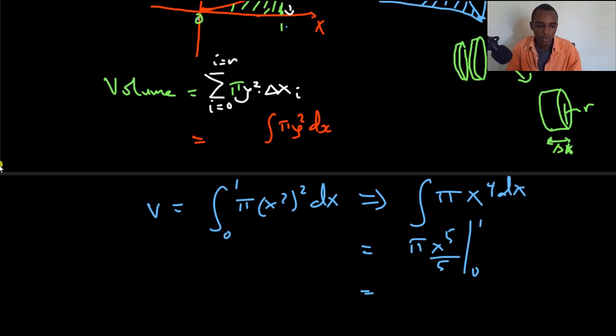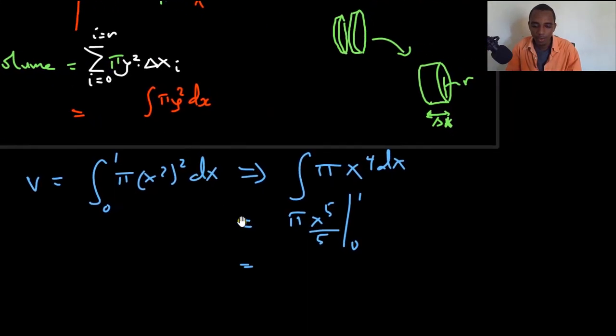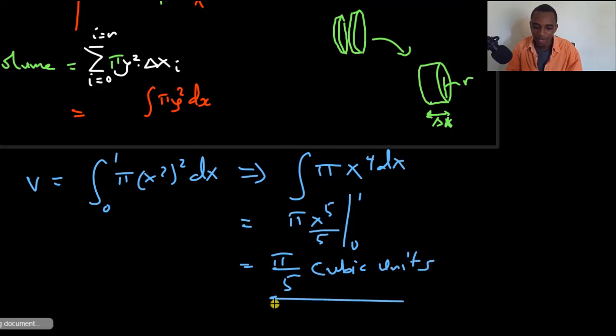This is going to be pi. You put in the upper limit, which is 1. That's just going to be pi over 5. If you put in the lower limit, which is 0, everything is just a 0. So our volume here is pi over 5 cubic units because we are talking about volume.